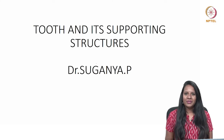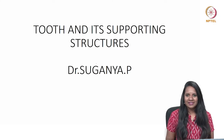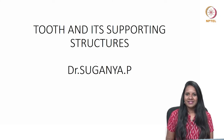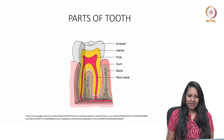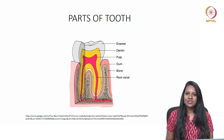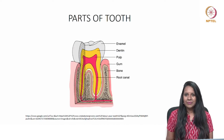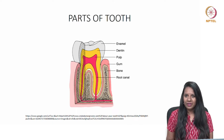Hi everyone, today's topic is tooth and its supporting structures. Tooth consists of enamel, dentin, pulp, cementum, and supporting structures: alveolar bone and periodontal ligament.